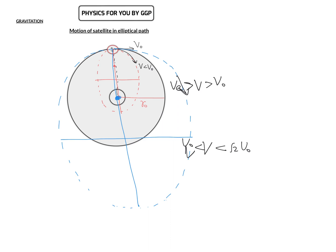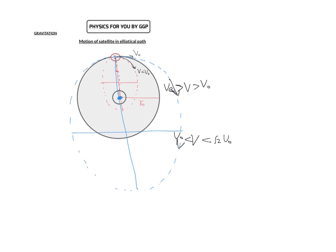Now, what happens if you project the satellite with a velocity equal to escape velocity? If the velocity equals escape velocity, the object will move in a parabolic path and will not return toward the planet's gravitational field — it will be able to escape. So if velocity equals escape velocity, it moves in a parabolic path.